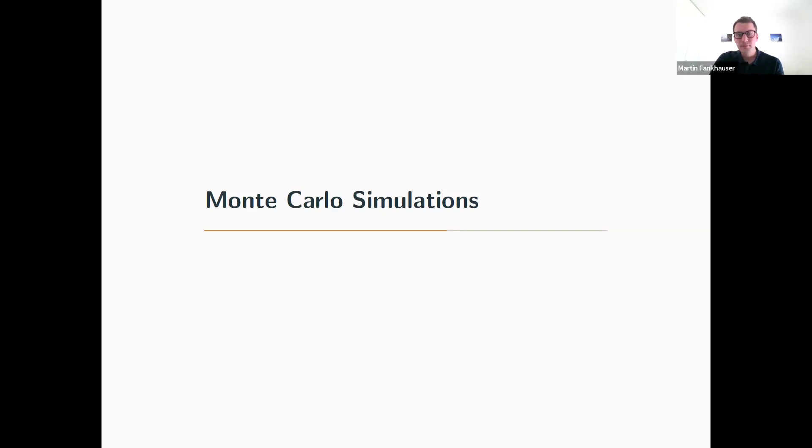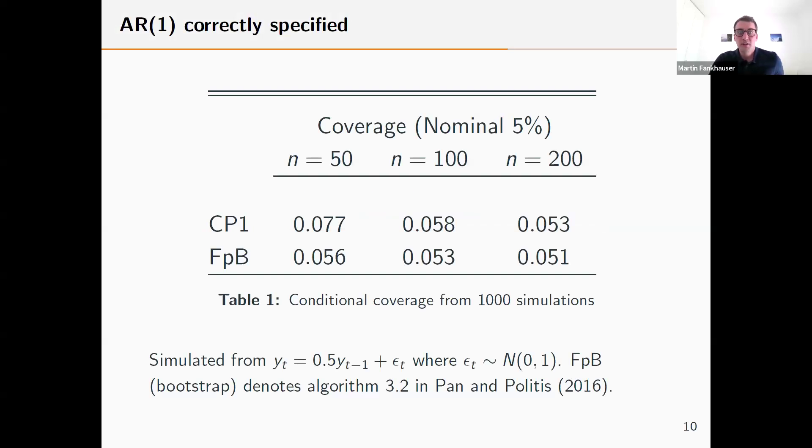The first question you might think of is how does this relate to the bootstrap? We have a natural competitor for autoregressive models, which is the predictive bootstrap proposed by Politis in 2016, the forward bootstrap using predictive residuals.